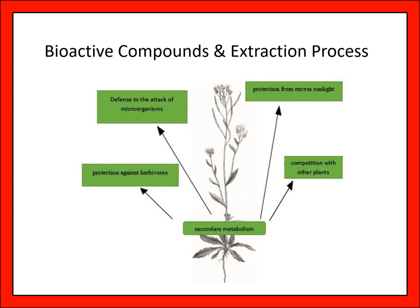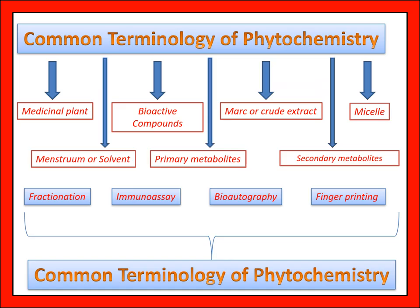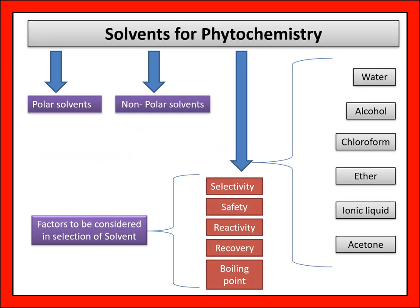The bioactive compounds are the most important part of medicinal plants because their availability gives plants curative values. Common terminology of phytochemistry includes medicinal plants, bioactive compounds, crude extract, primary metabolites, and secondary metabolites. Solvents for phytochemistry include water, alcohol, chloroform, ethyl acetate, ionic liquid, acetone, and polar or non-polar groups.